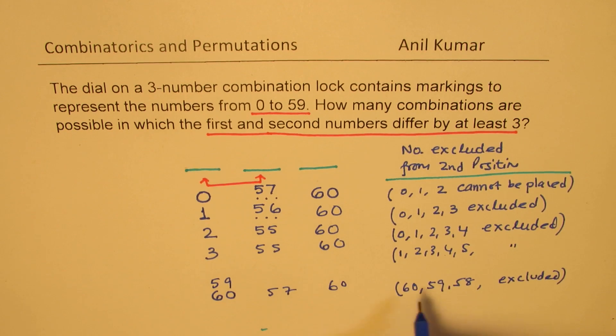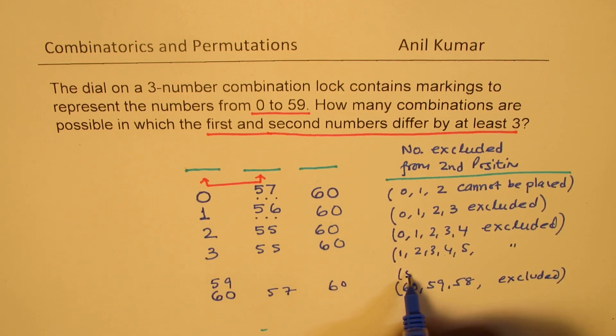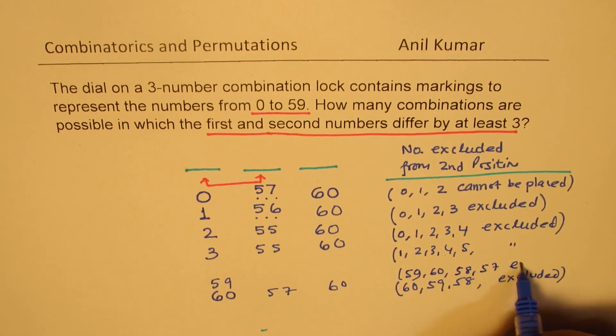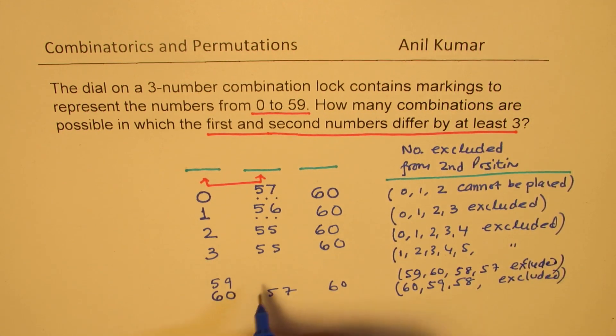With 59, the case will be what? I cannot place 59, but I cannot place 60 also. So 59, 60. I cannot place 58, nor can I place 57. So these numbers are excluded. So that means 56 numbers are possible, 4 are excluded, and 60 no restriction for the next one.